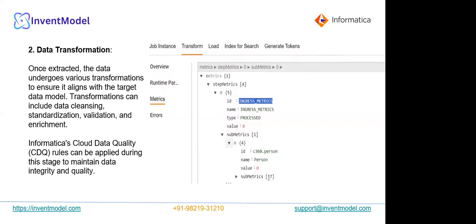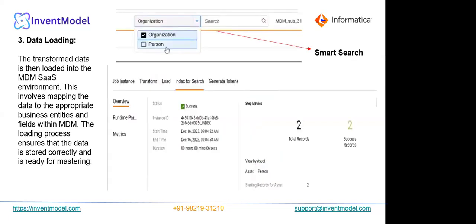The next stage is data transformation. Once you have the data, you have to make sure that it is in a consistent state. You perform different transformations, which can include a cleaning process to get valid data in a consistent state. This includes data cleaning, standardization, validation, and enrichment. Informatica Cloud Data Quality — CDQ — rules can also be applied during this data transformation stage.